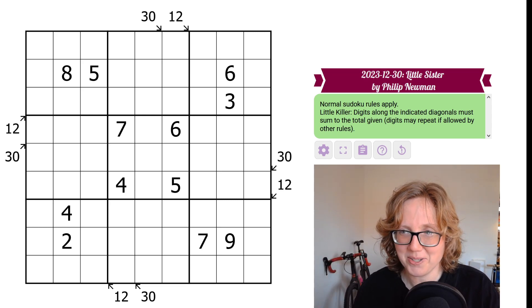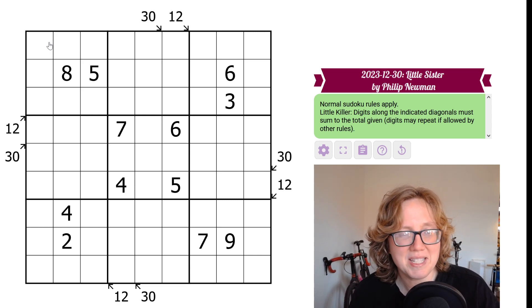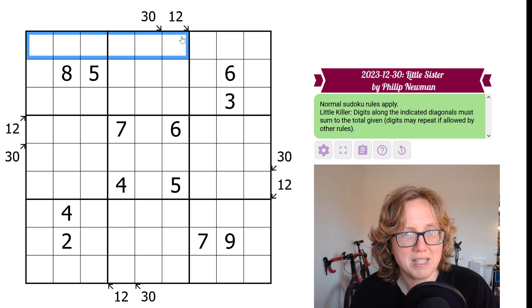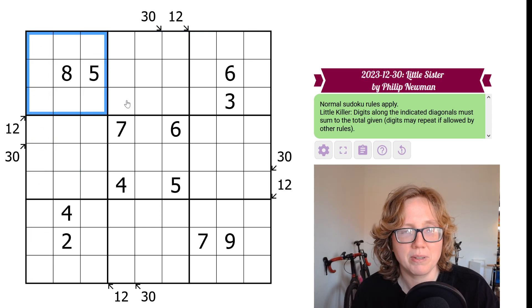So this is a little killer Sudoku. We're following standard Sudoku rules, so we have to place the digits 1 through 9 one time each in each row, each column, and each marked 3x3 region.